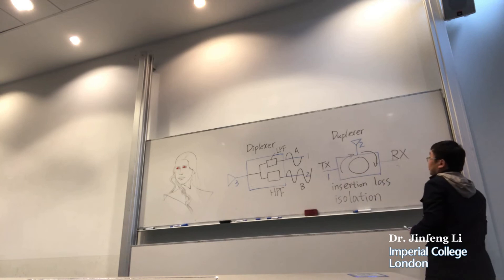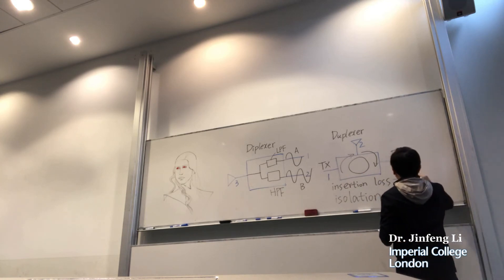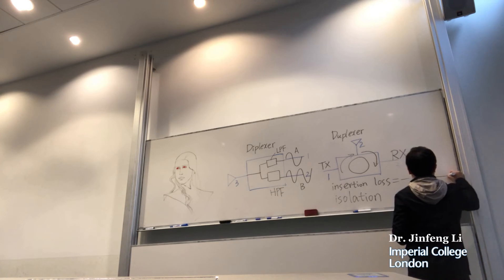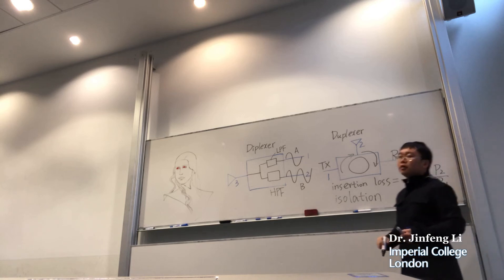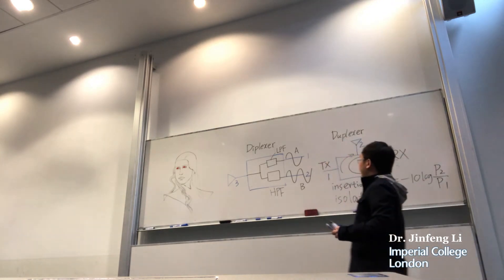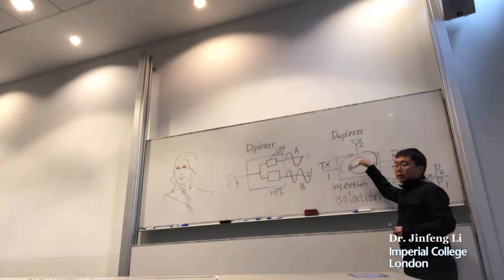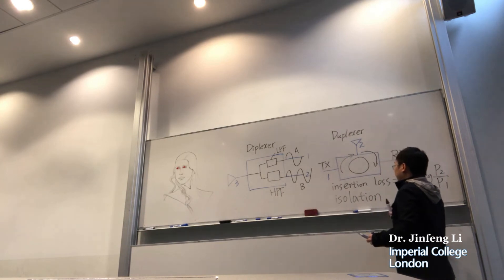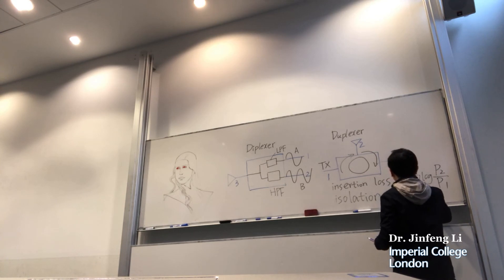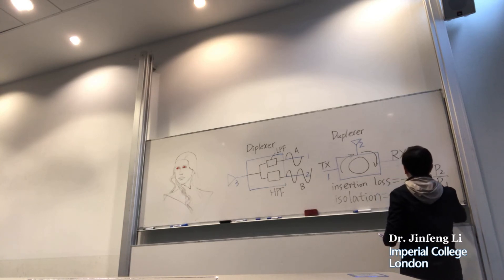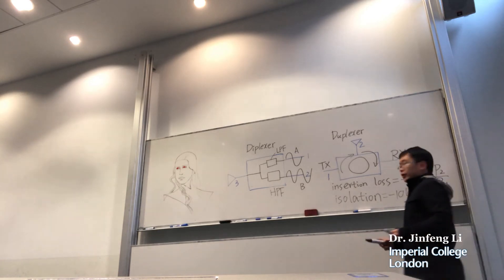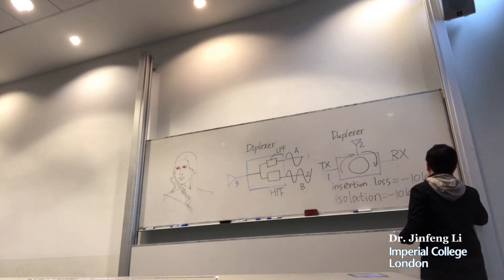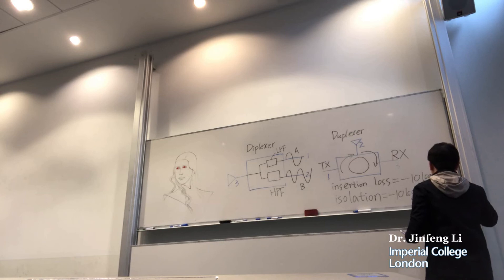The insertion loss of a D-Plexa is defined by minus 10 log P2 over P1. A low insertion loss ensures that the power transmitted is not compromised. Another significant feature is the isolation, defined as minus 10 log P3 over P1. A good isolation value is normally minus 70 dB or less.